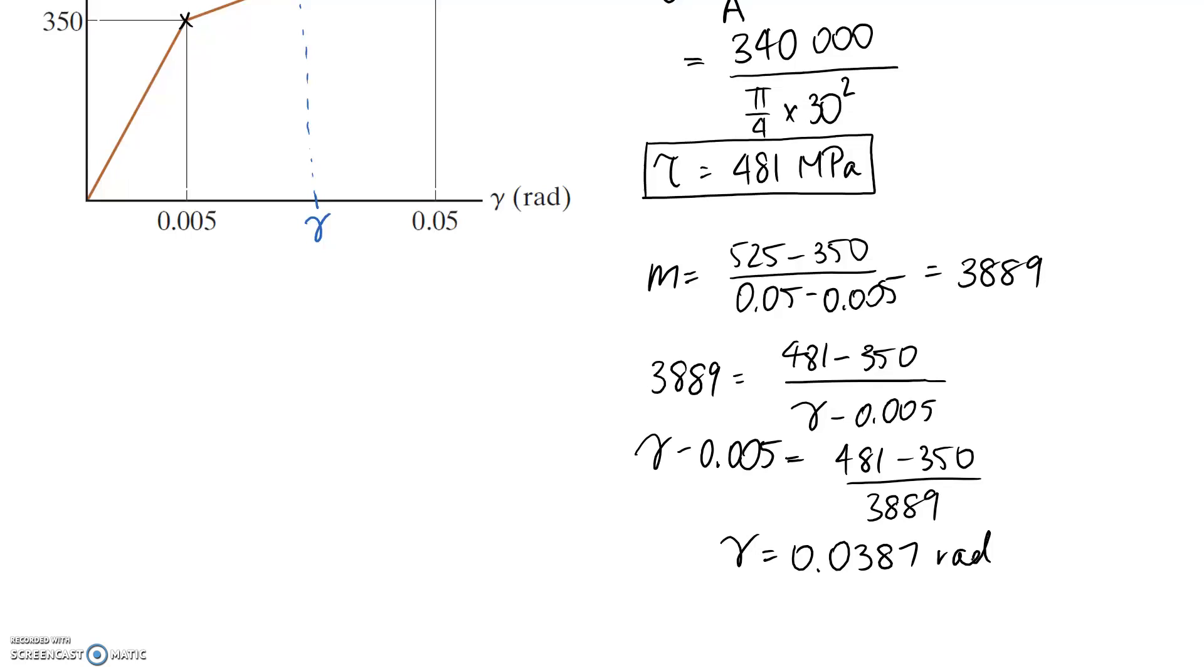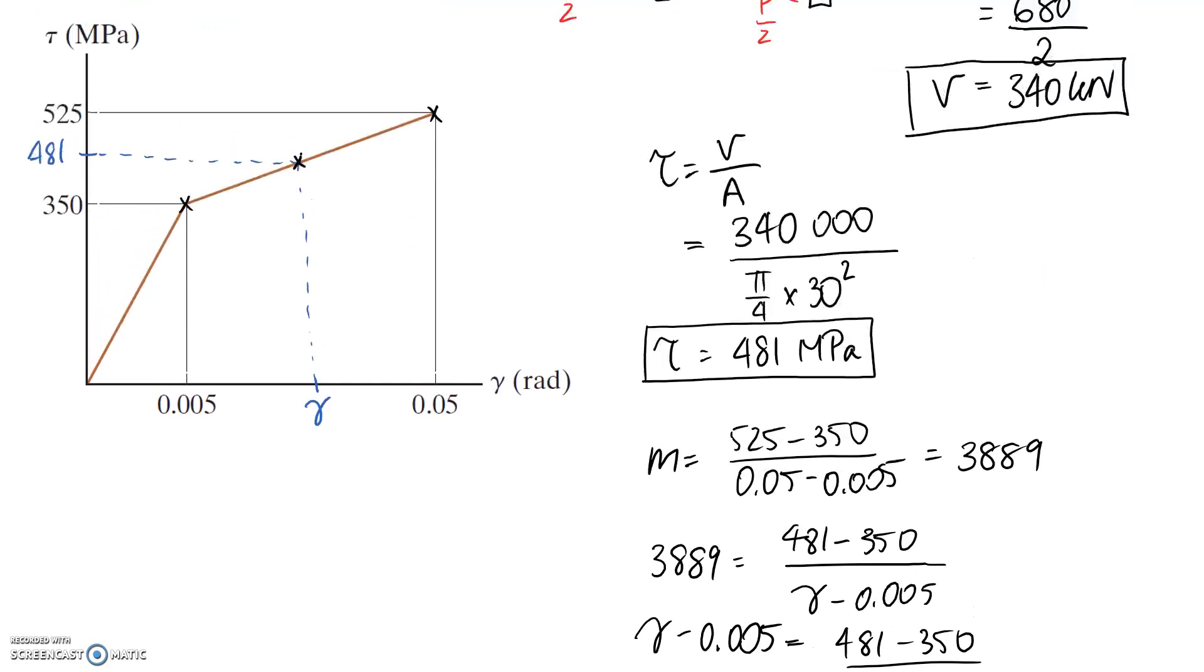So this here represents the strain that's going to be caused when we have this 680 kN applied. However, what happens is if we remove the 680 kN, we're still going to have caused some permanent deformation in our material, and we can calculate that if we dot this line back. This is supposed to be parallel to this one here, which is through the elastic region of our curve. If we're able to find where it then intersects with our axis, this here represents the permanent deformation that we've caused.